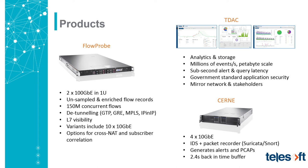The TDAC is fundamentally analytics and storage. It's horizontally scalable, handles millions of events per second from different data sources — principally from the flow probe and the CERN. It scales out into petabyte scale and provides sub-second alert and querying latency on anomalous behavior and threats, using a multi-layered approach to threat classification including anomaly detection and traffic reputation. It comes to government standard application security, and the tool is designed to mirror both the network and the stakeholders — you can configure it to exactly mirror your stakeholder teams, limiting certain users to specific data sets and alert types, while it automatically discovers elements of the surrounding network.